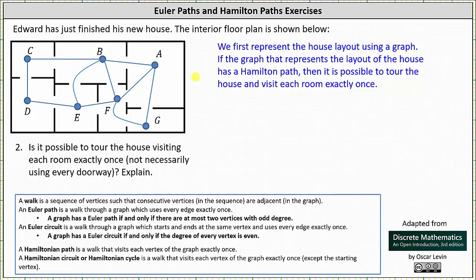In fact, this graph has many Hamilton paths. Let's find just one possible Hamilton path. For example, let's start at vertex A and then find a walk that visits each vertex exactly once. Here is one possible Hamilton path.